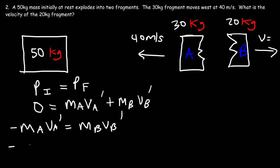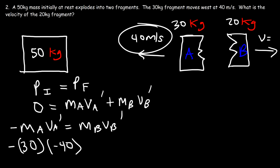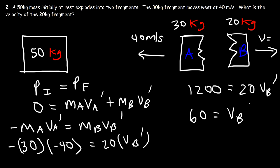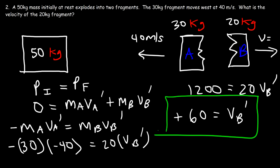Fragment A has a mass of 30 kg and a velocity of negative 40 — negative because it moves west. The mass of fragment B is 20 kg, and we need to calculate VB'. So negative 30 times negative 40 is positive 1200, and that equals 20 times VB'. So 1200 divided by 20 is 60 meters per second. The positive answer indicates it's going east, in the positive x direction. That's the final velocity of fragment B.